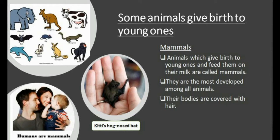Animals which give birth to young ones and feed them on their milk are called mammals. They are the most developed among all animals, and mostly their bodies are covered with hair. Humans are also mammals. Some examples of mammals are cats, horses, elephants, goats, rabbits, and rats.